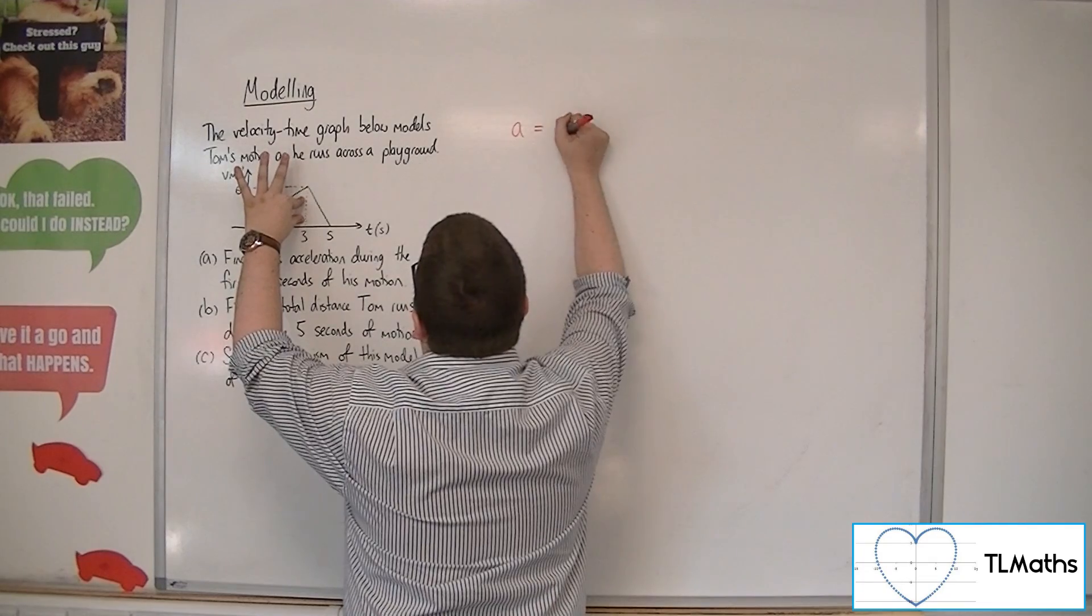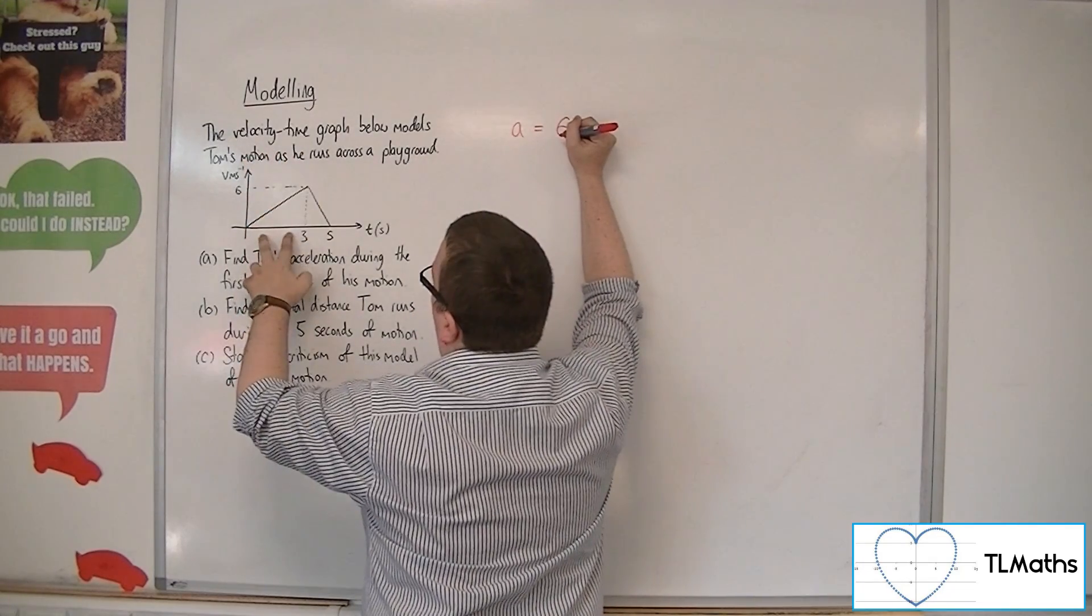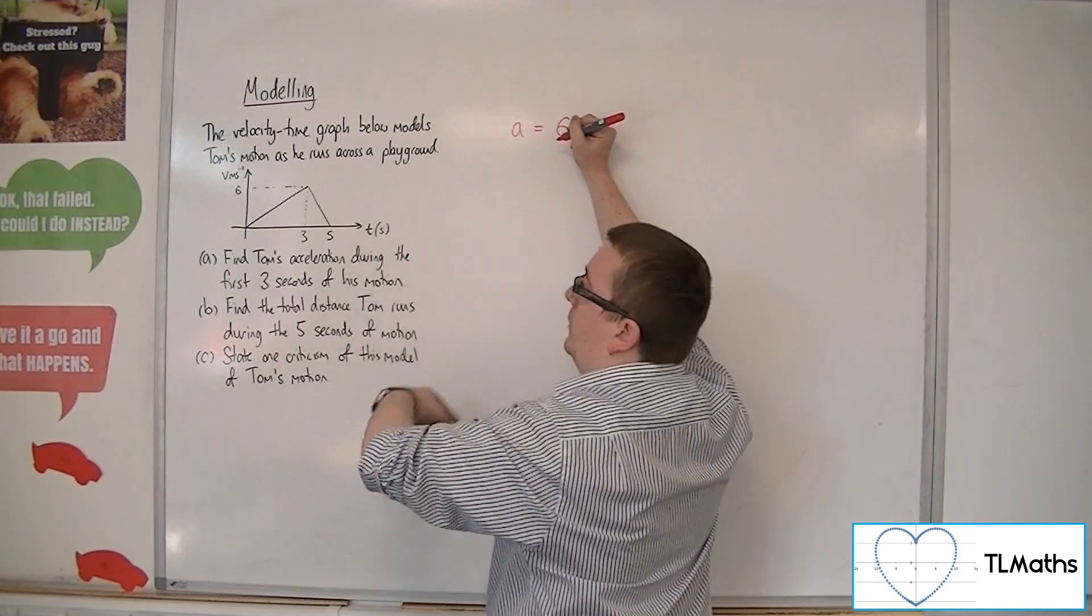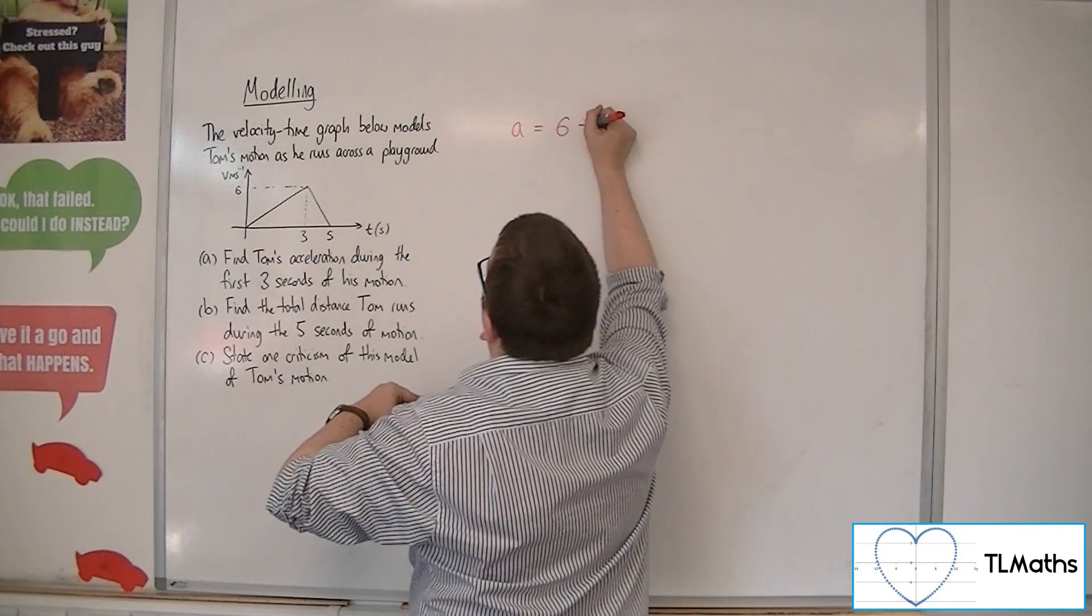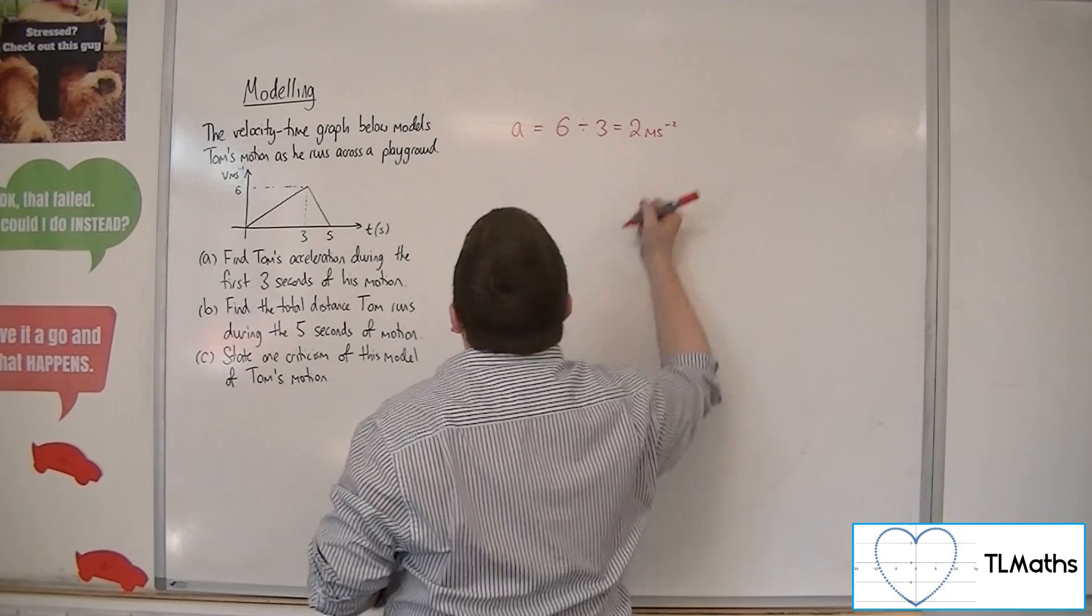divided by the time. Meters per second divided by seconds gives you meters per second per second. So divided by 3 is equal to 2 meters per second per second.